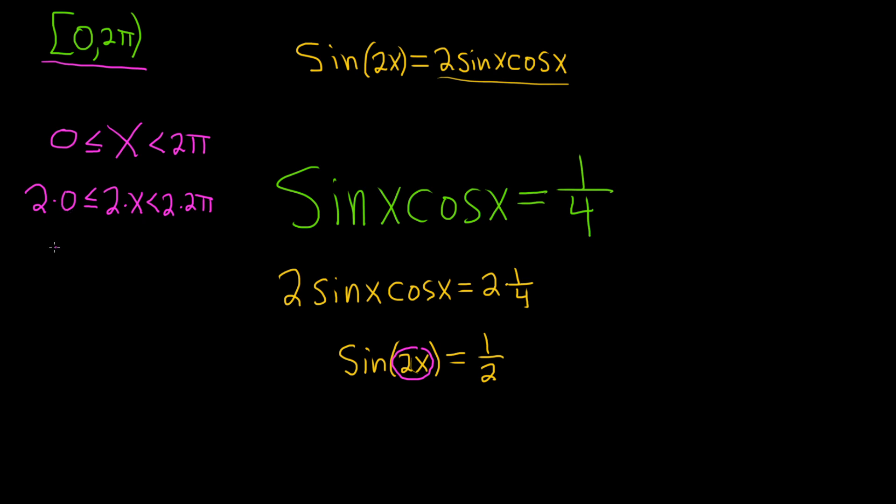So this piece here is going to be 0. So 0, less than or equal to 2x, less than 4π. And to make it even cleaner, what you can do now is you can call this piece u. So we really have 0, less than or equal to u, less than 4 times π.